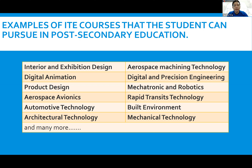The table here shows courses where D&T students have a certain advantage over non-D&T students — courses like interior and exhibition design, product design, mechatronics and robotics, digital and precision engineering, built environment, mechanical technology, and many more. I look forward to seeing you in my class in 2022. Thank you for watching this presentation and have a great day ahead.